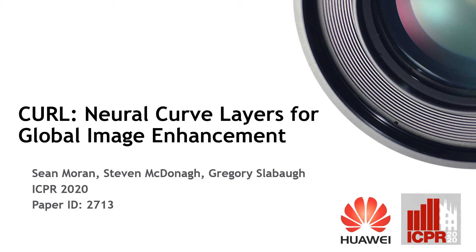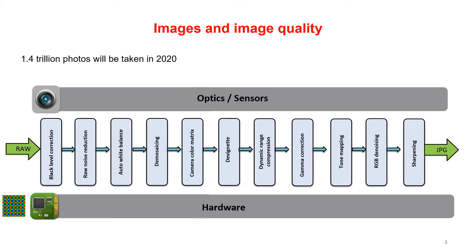In this paper, we introduce CURL, Neural Curve Layers for Global Image Enhancement. It has been estimated that in 2020 alone, worldwide we will take 1.4 trillion photos. In future years, this number will only increase. To get the most out of our photos, image quality is of fundamental importance.